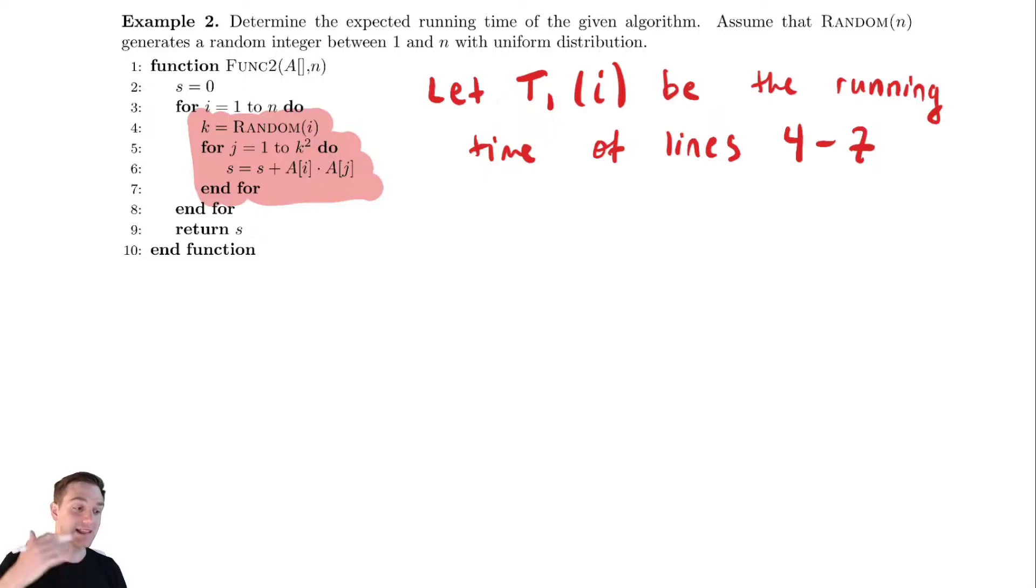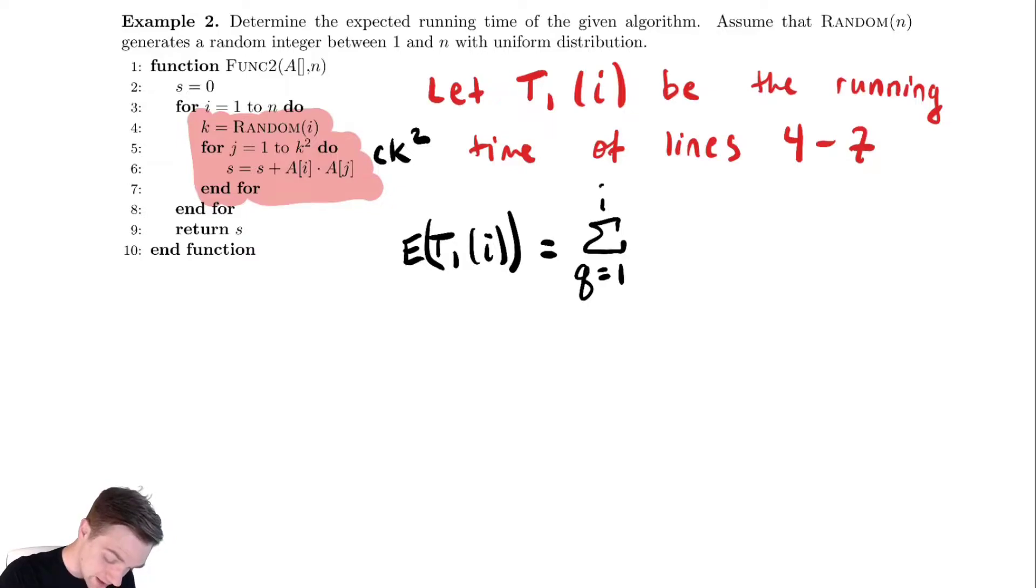And to analyze that we're going to attack it the exact same way as we did before. The for loop takes ck² time. The expected time of T1(i) is the sum from q equals 1 to i. These are all of the values my random variable k could take. They go from 1 to i in this case. Of the probability that that random variable k is equal to that particular value q times the runtime when k is equal to that particular value q.